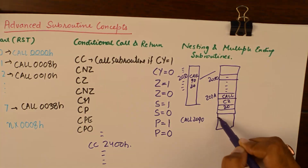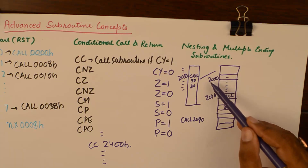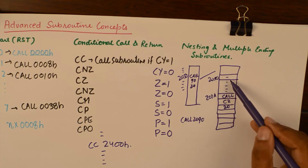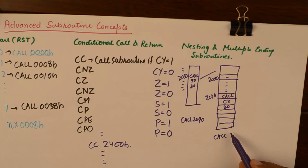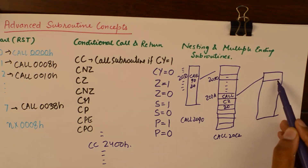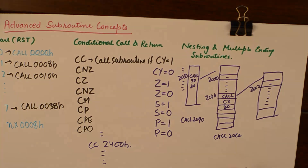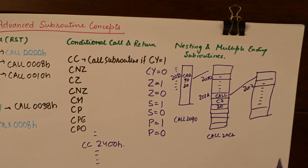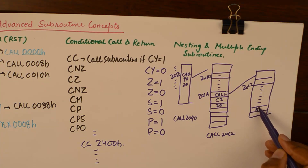At 2090 you encounter another call before completing the first subroutine. Within that subroutine you encounter yet another subroutine — for example, call 20C2 — taking the processor to location 20C2. This is a subroutine within a subroutine.